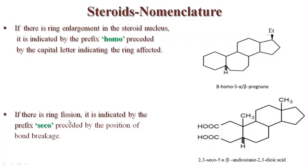If there is ring fission, it is indicated by the prefix 'seco' preceded by the position numbers of the bond broken. Here in the A ring a bond is missing; the bond breakage is at positions 2,3. So it is represented as 2,3-seco-5α/β, and since the nucleus is androstane with a dioic acid group, the complete name is 2,3-seco-5α/β-androstane-2,3-dioic acid.